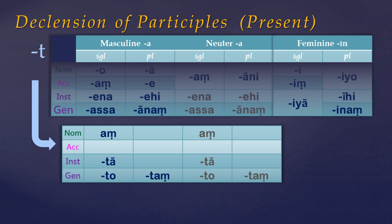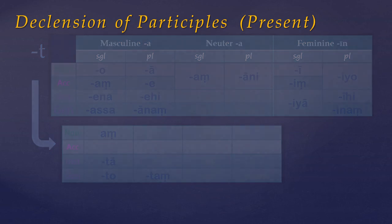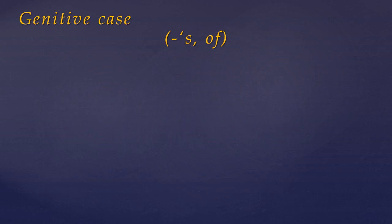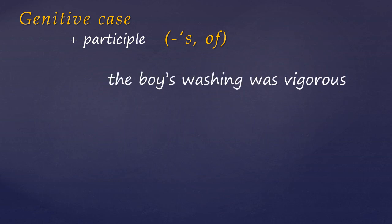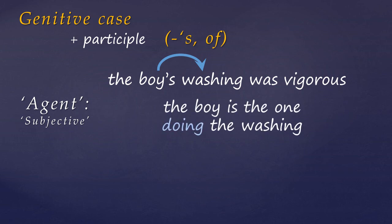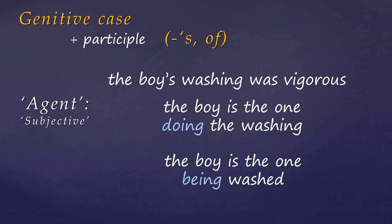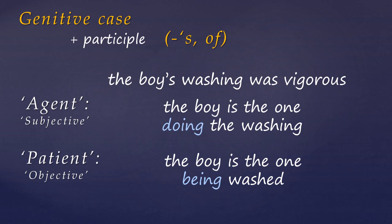You might wish to refer back to lesson 8, which covers participles. Now let's return and look at how participles work with the genitive. Occasionally, when a genitive noun is accompanied by a participle or a verbal noun, the meaning can often be ambiguous. For instance, consider 'the boy's washing' — we can understand the genitive as marking the agent of the verbal action, that is, the boy is doing the washing. This is called the agent or subjective genitive. Or we could understand this as the boy being the one who is washed, making him the patient undergoing the action — this is sometimes called the objective genitive.